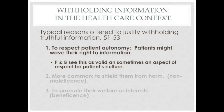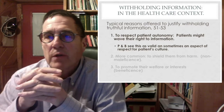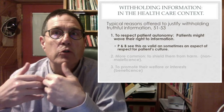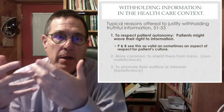Post and Blustein note on pages 51 to 53 in chapter 4 that health care professionals often provide reasons that attempt to justify withholding truthful information. One such reason appeals to patient autonomy, saying that patients might have waived their right to information — patients might have asked not to be informed. In such a situation, providing information violates their autonomy. Post and Blustein do say this is a valid reason for withholding truthful information, noting it's often an aspect of respect for the patient's particular culture, as some cultures do not value patient participation in decision making the way we do.